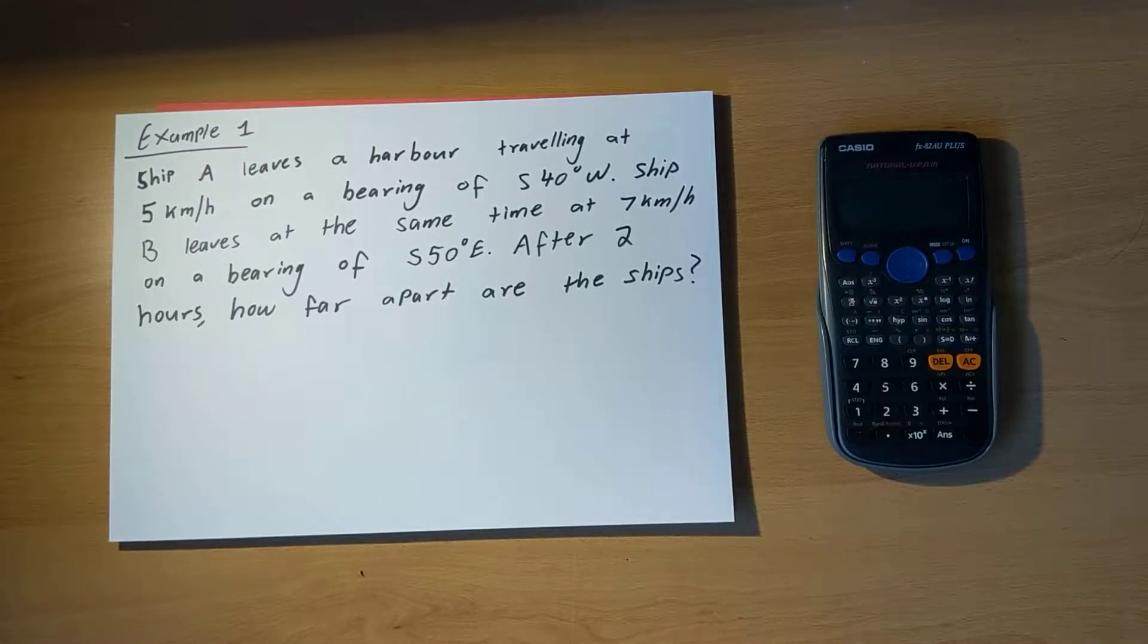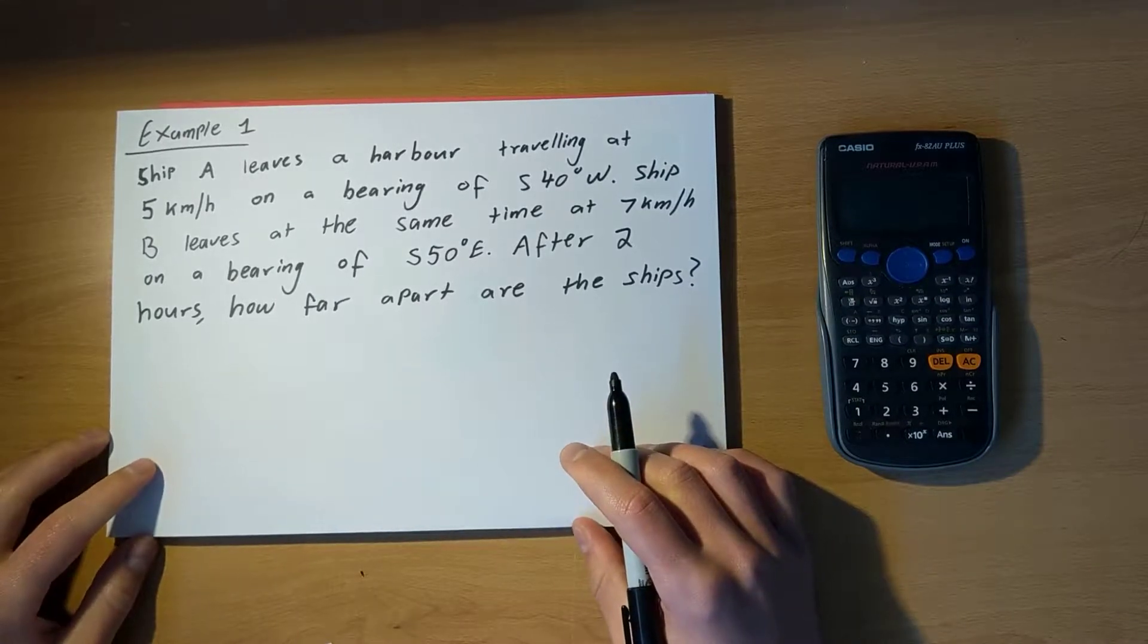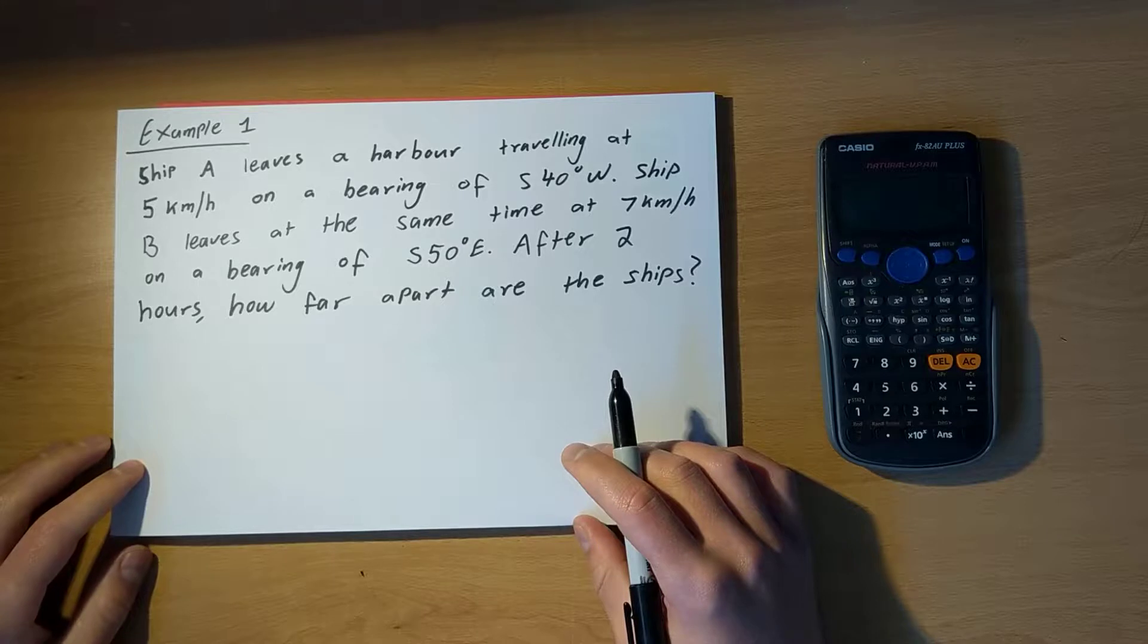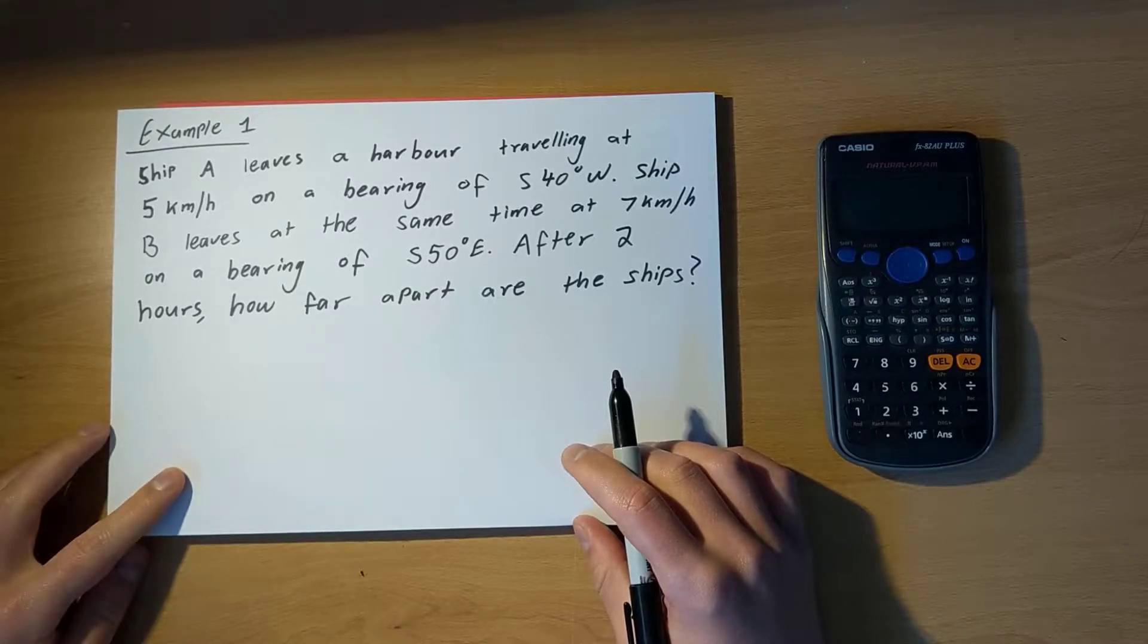Ship B leaves at the same time at 7km per hour on a bearing of south 50 degrees east. After two hours, how far apart are the ships?